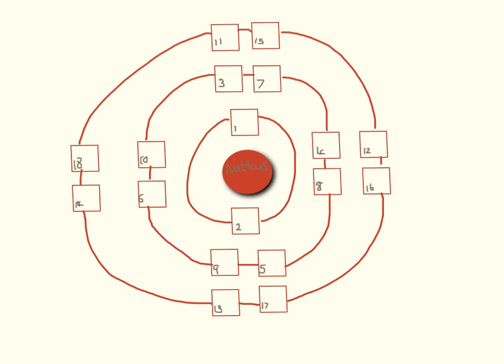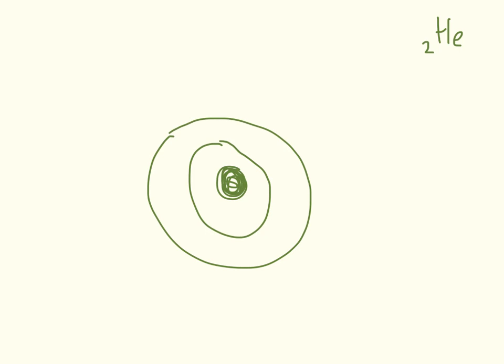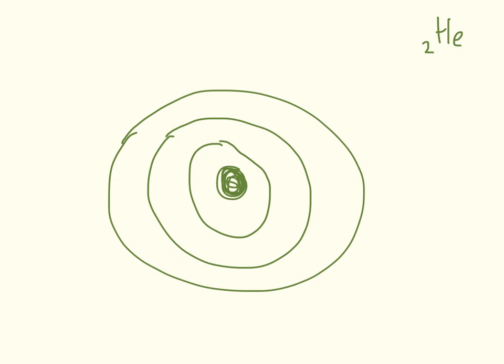The next one is helium, and the atomic number for helium is two. Drawing the nice neat picture: that's my nucleus in the middle, here are my shells, and helium just has one, two electrons.